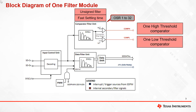The comparator filter provides faster settling time as it supports oversampling settings from 1 to 32. It is used to detect short circuit conditions, over or under current conditions. The output of the comparator filter is an unsigned integer which is compared against programmable high threshold and low threshold comparators.